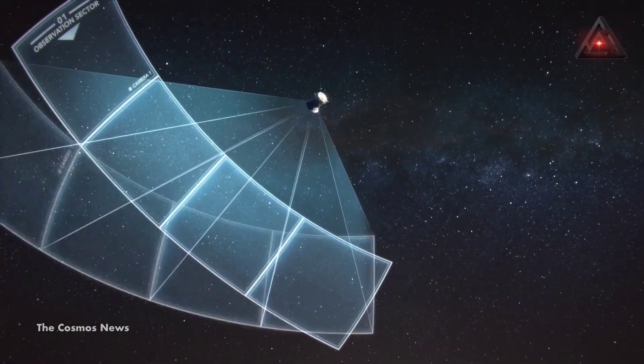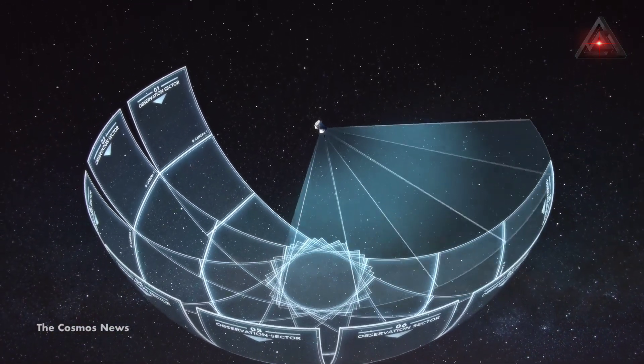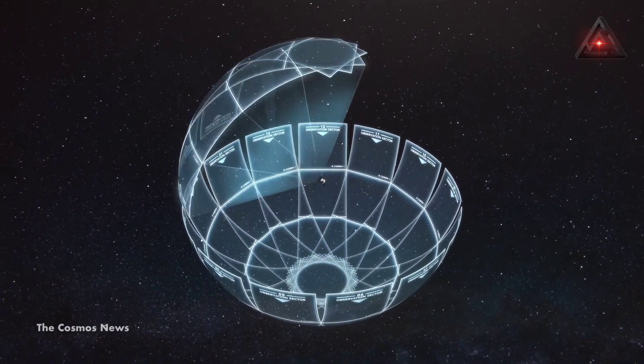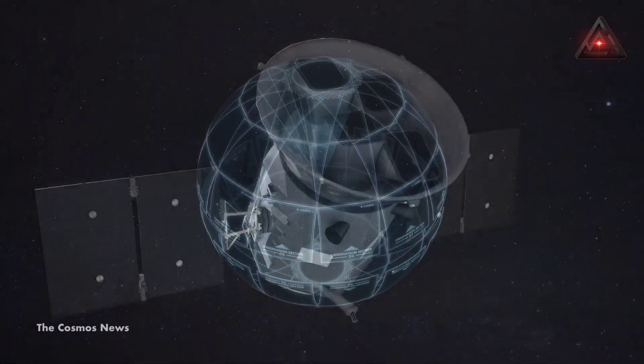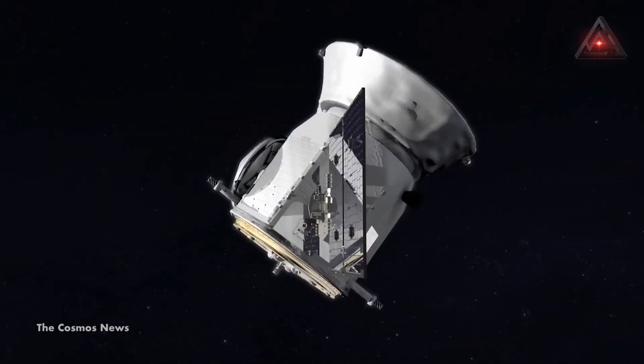The mission began observing the southern sky in 2018, then turned to the northern sky. In 2020, the mission refocused on the southern sky again for additional observations, revealing the fourth planet in the TOI-700 system.